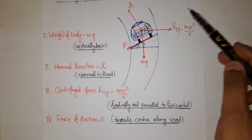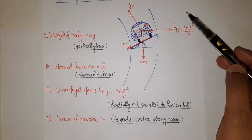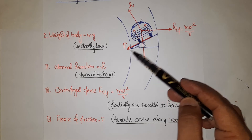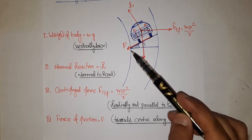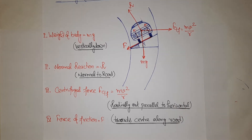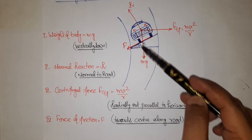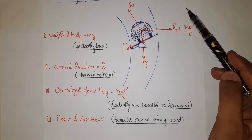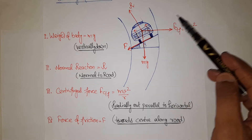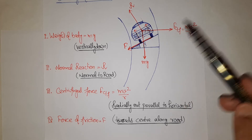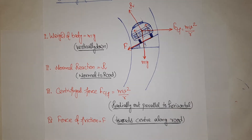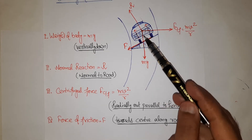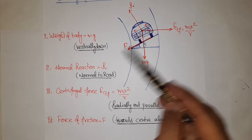The component of centrifugal force increases with increasing velocity. Force of friction goes on increasing in response, but force of friction can only increase up to a certain limit — the limiting friction. When the velocity is such that the centrifugal force component along the road (radially outward) exceeds the force of friction, the body will skid.